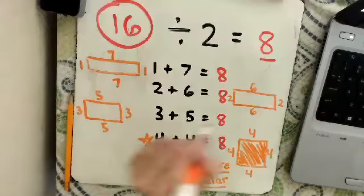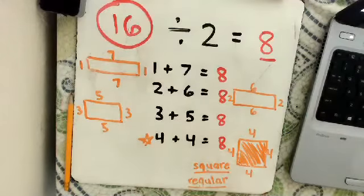So how many rectangles have a perimeter of 16? One, two, three, four rectangles. So that's basically what you are doing for your problem set today.